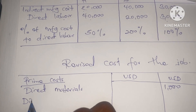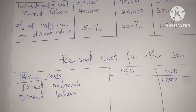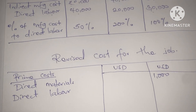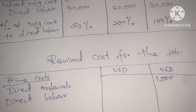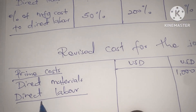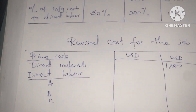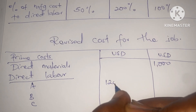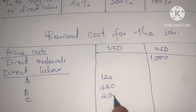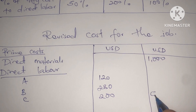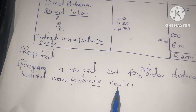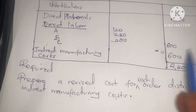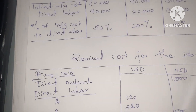Now we go to the direct labor. We have three departments: A, B, and C. The direct labor figures are 120, 280, and 200 respectively. The total of these makes 600. The main issue here is to redistribute the indirect manufacturing cost, and this 600 is what we are redistributing.